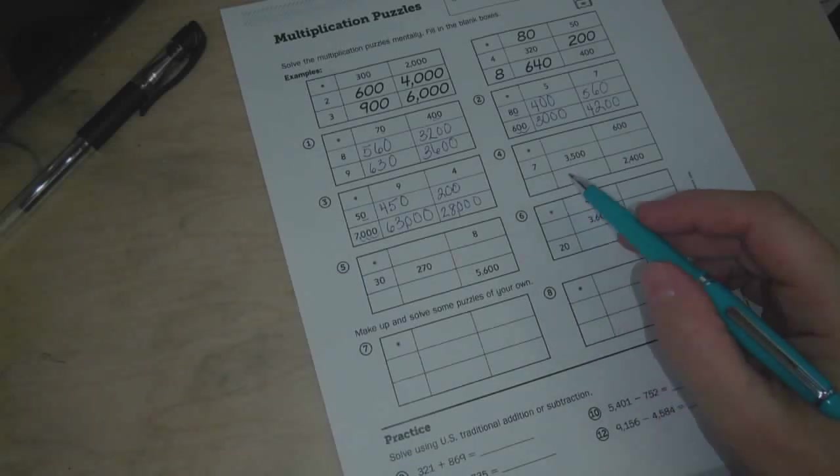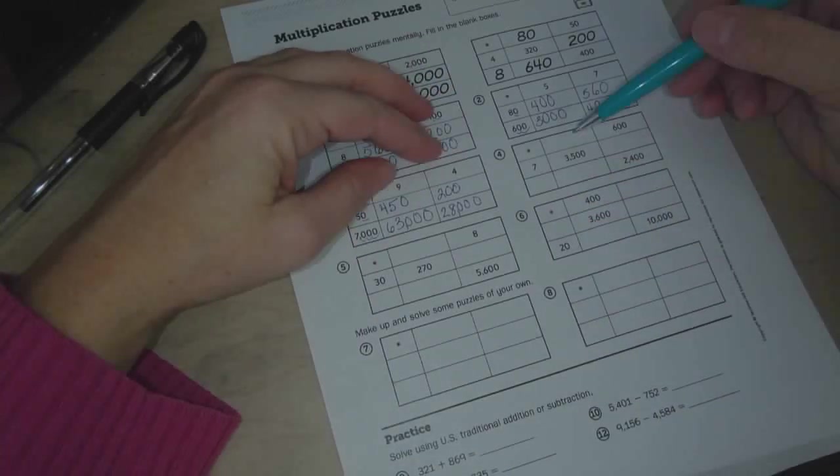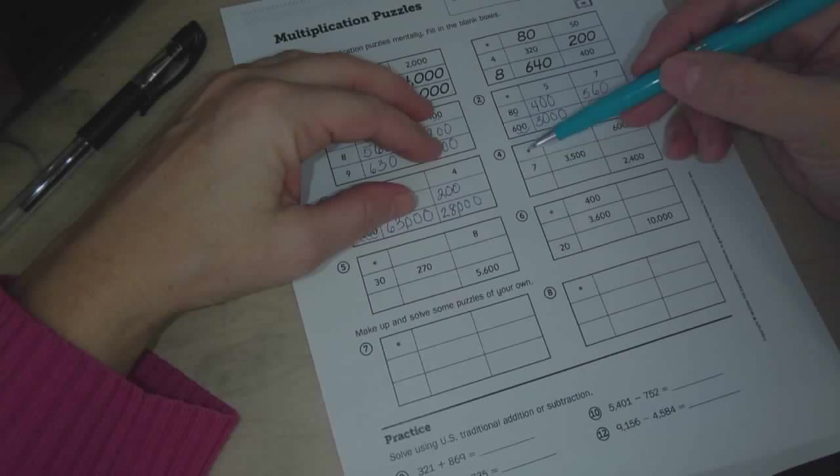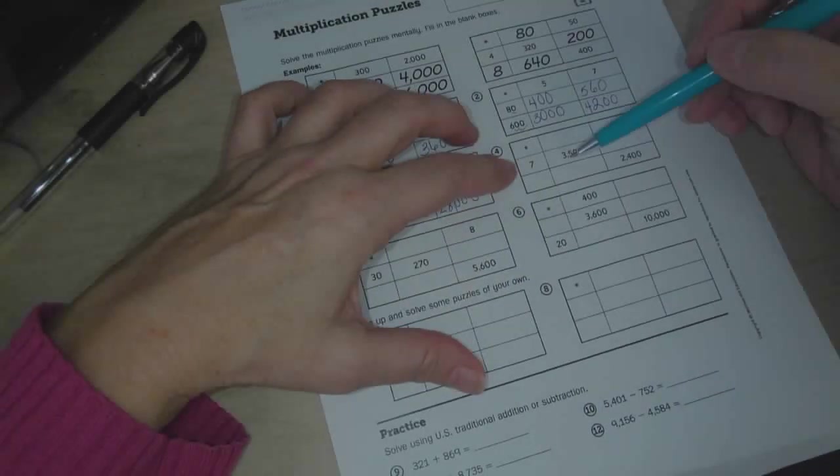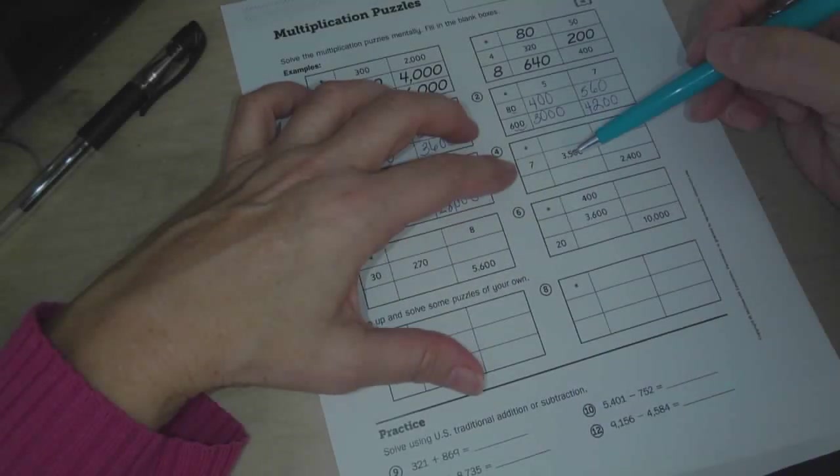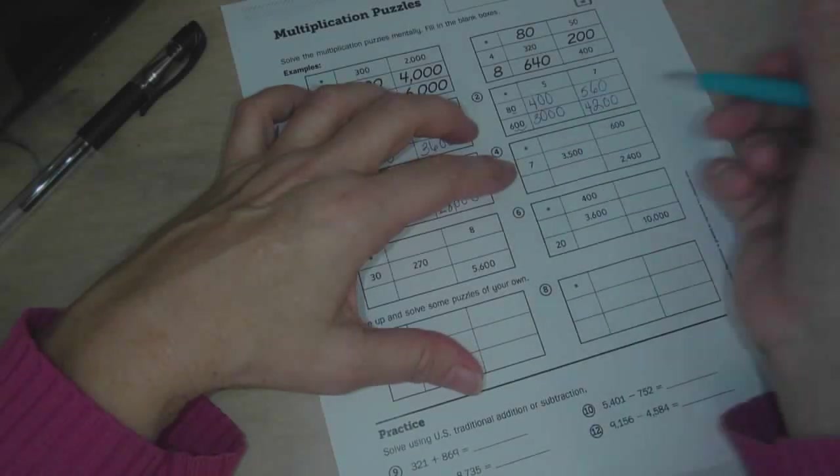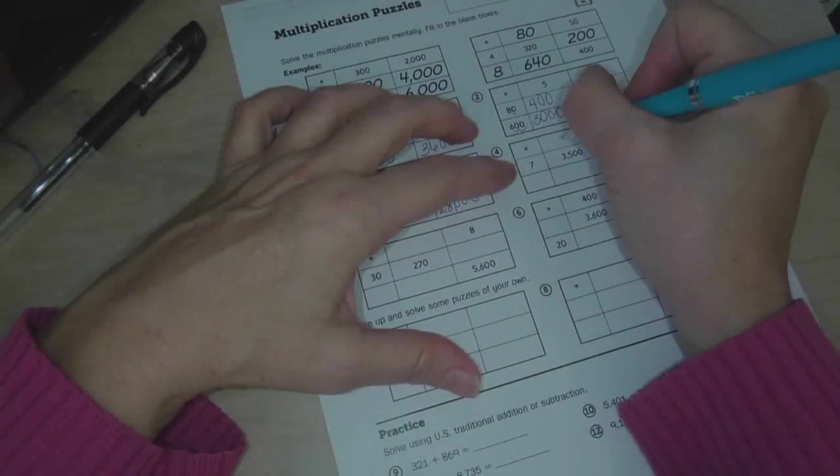Number 4. So this time we have to figure out what goes here. So 7 times something equals 3,500. So once again, we're going to use our basic fact of the 35. So 7 times what equals 35? 7 times 5 equals 35.